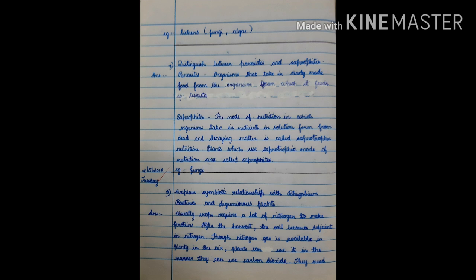Eighth question. Explain. Symbiotic relationship with rhizobium bacteria and leguminous plants. Answer. Usually, crops require a lot of nitrogen to make proteins. After the harvest, the soil becomes deficient in nitrogen. Though, nitrogen gas is available in plenty in the air.